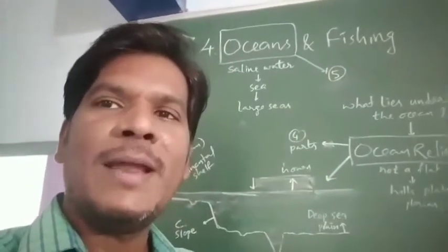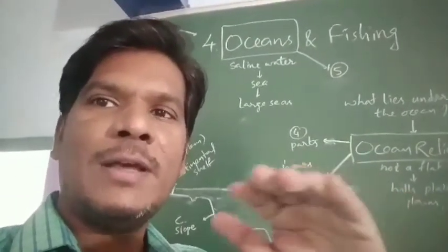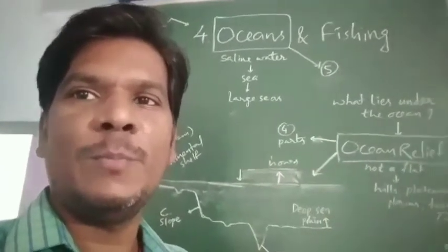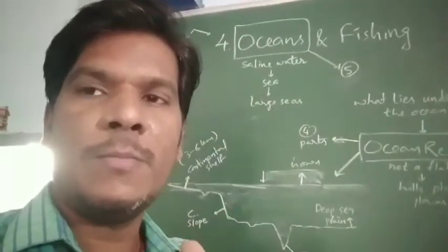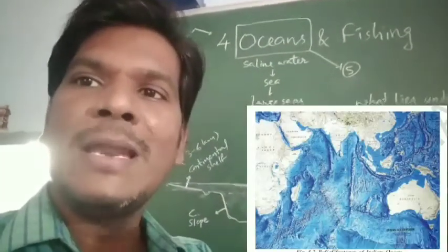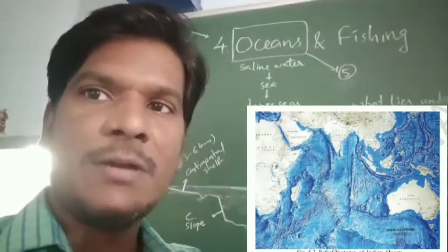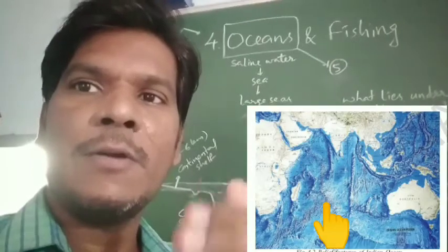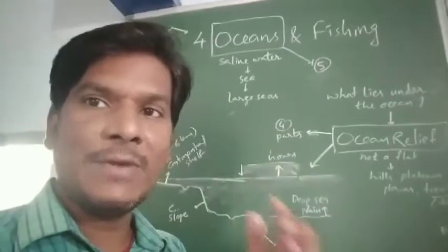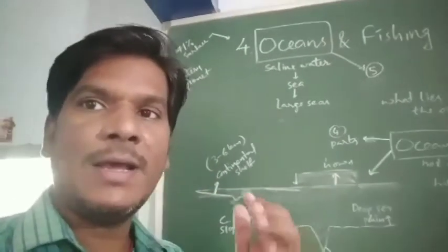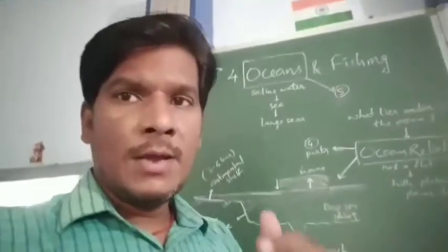Earth is known as a blue planet because it is covered by water. On the earth surface it seems blue. If you observe continents and water bodies, continents cover 29 percent of the earth surface and the remaining 71 percent of the earth surface is covered by water, in the form of seas and oceans.